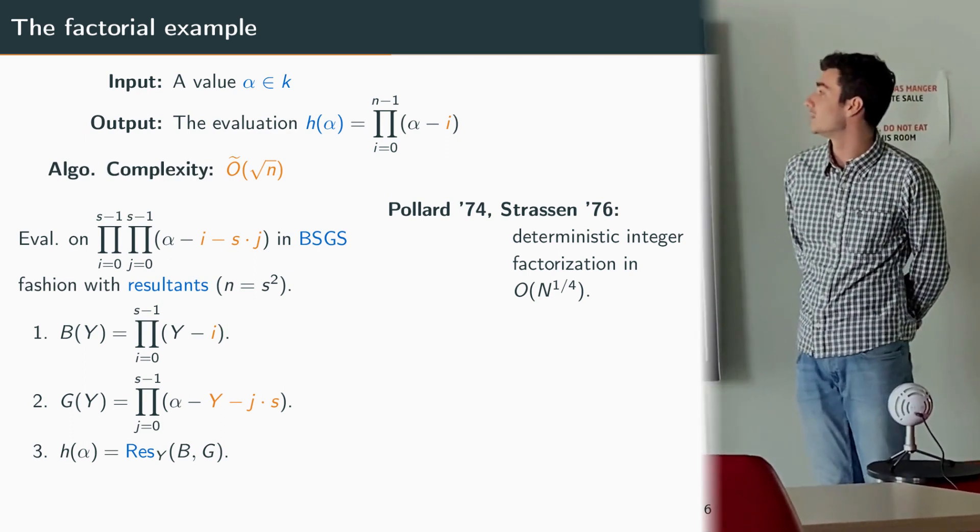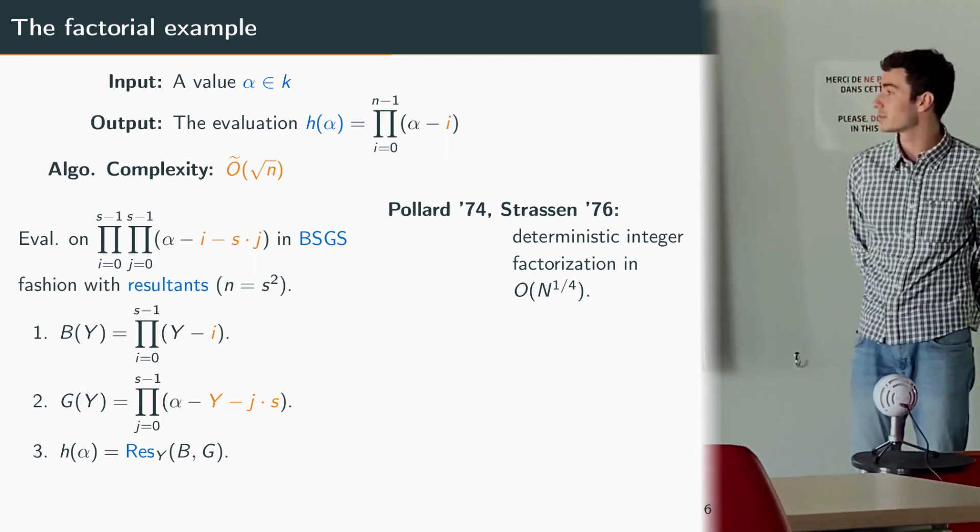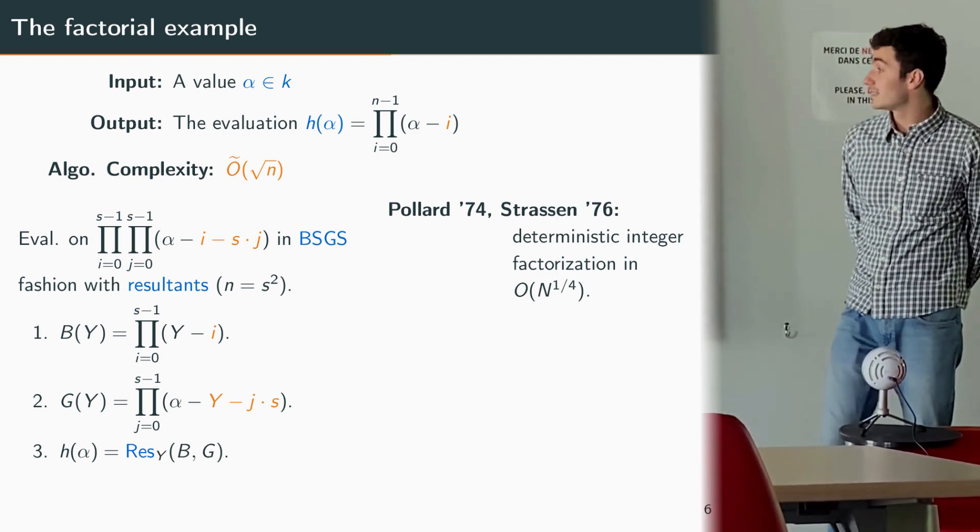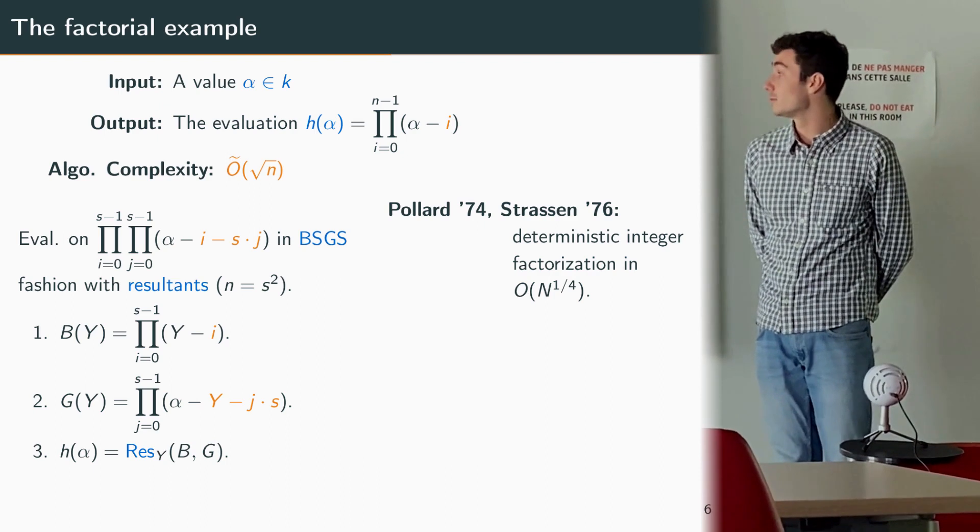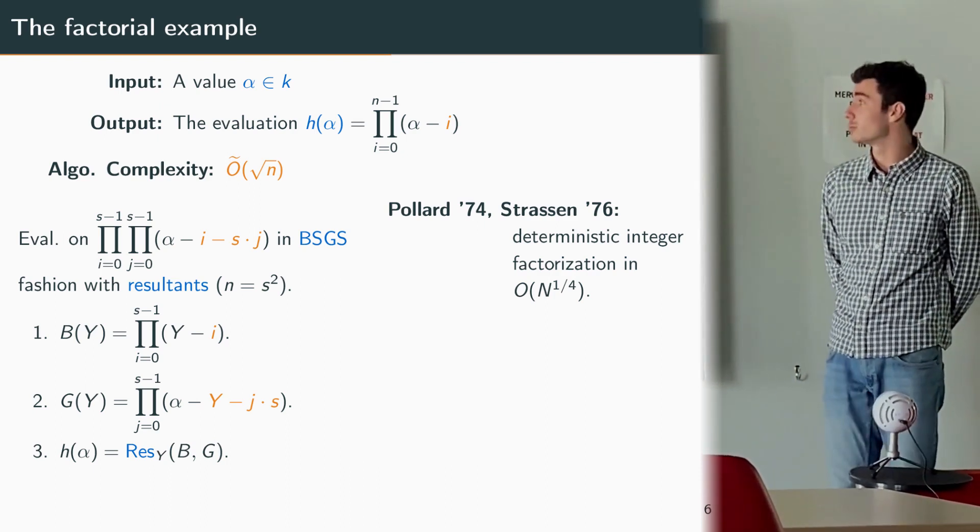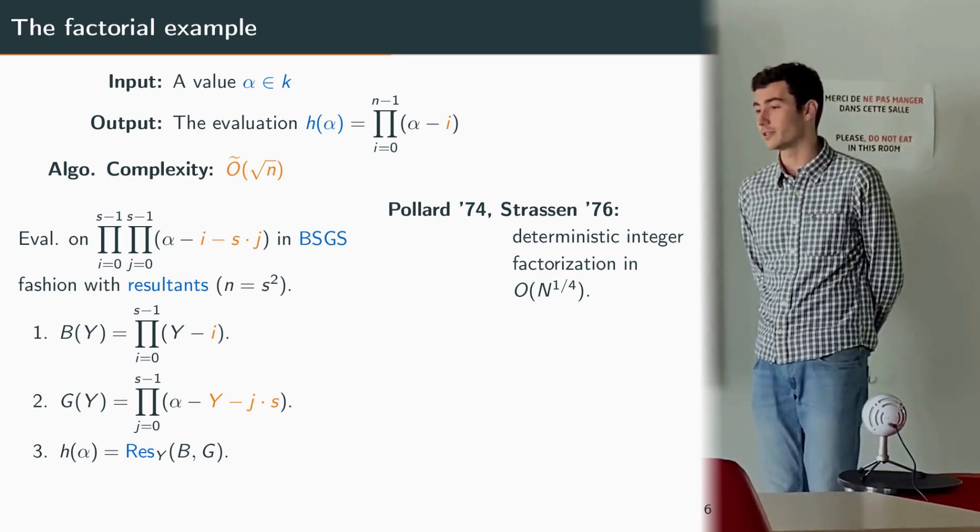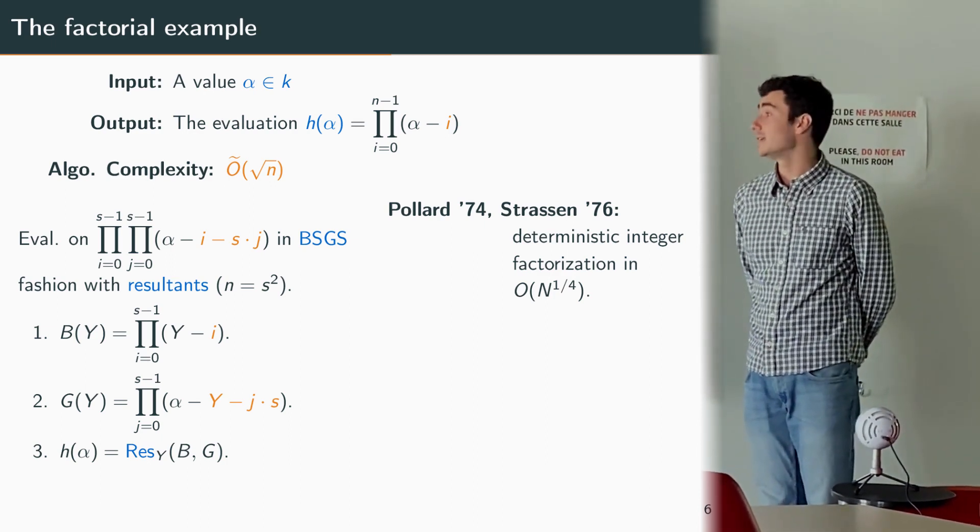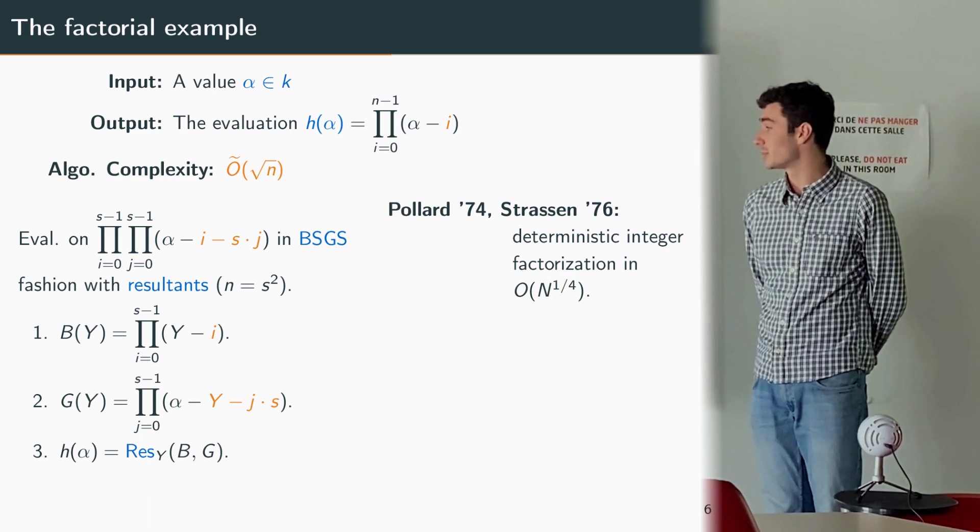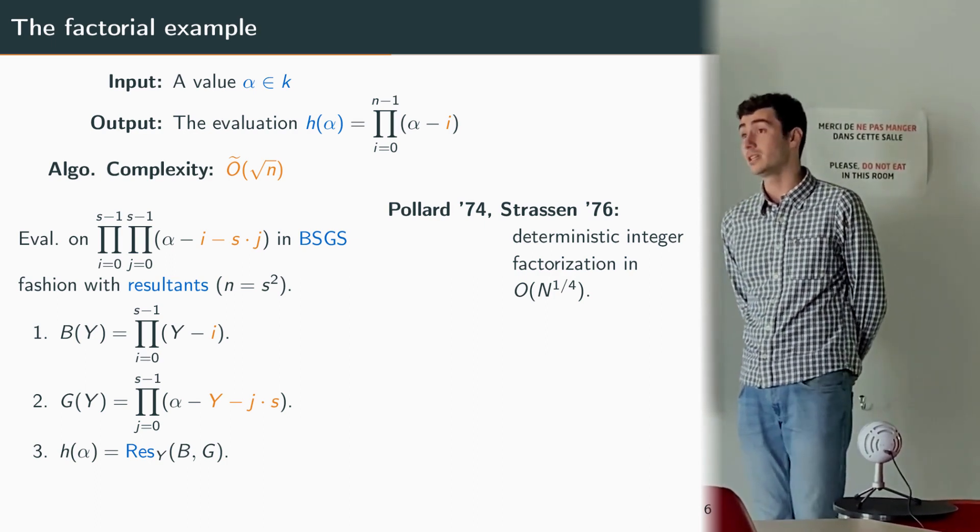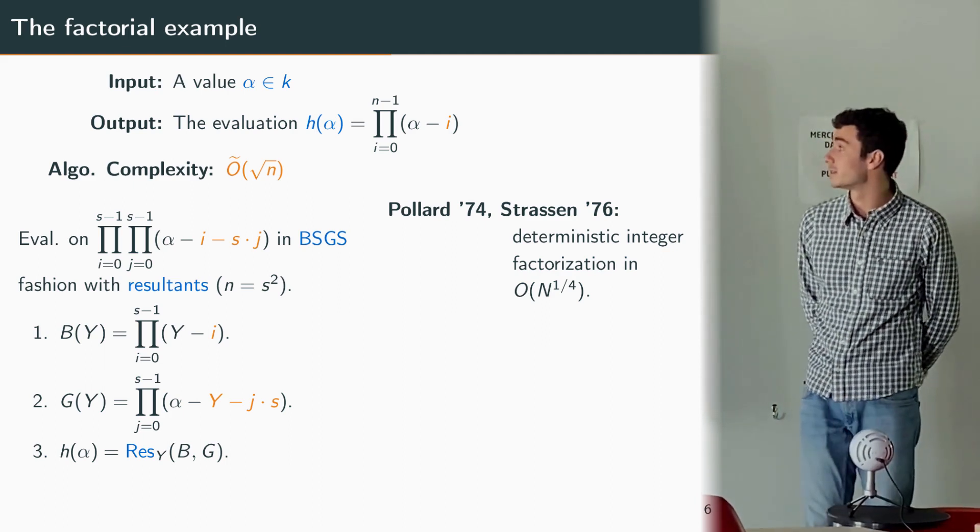The nice properties of resultants is that if you compute the resultant of b and j it gives h of alpha, and so this gives Õ of square root of n complexity. By Õ I mean that I'm forgetting all the logarithmic factors. To understand this complexity, the idea is that we have these two polynomials b and j whose degree is s which is the square root of n, and then the computation of the resultant for generic polynomials is in Õ of degree of b plus degree of g, so here it gives a square root of n.